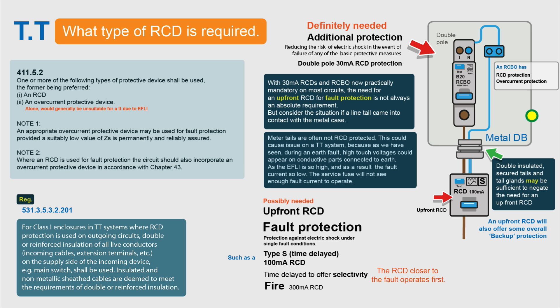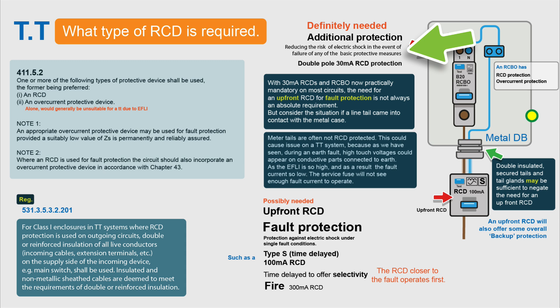TT systems have always required some form of fault protection. It used to be voltage-operated earth leakage circuit breakers, then that moved on to RCDs. We now have RCDs on every circuit, but it used to be that you had one up-front RCD. That can cause nuisance tripping issues — if it goes off you lose power to the whole house — so they had a time-delayed RCD rated at 100 milliamps to provide fault protection. You can have an RCD for fault protection and an RCD for additional protection. Fault protection is protection against electric shock under a single fault condition, while additional protection reduces the risk of electric shock in the event of a failure of basic protective measures. The vast majority of circuits now require this additional protection of a 30 milliamp RCD, so the requirement for an up-front RCD for fault protection is not absolute but depends on the installation's requirements.